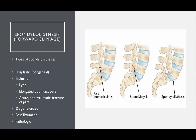Spondylolisthesis is a forward slippage. Here's your normal spine showing the area of the pars interarticularis, which is between the facets and the pedicles. The spondylolysis phenomenon is shown in the center diagram, and when that progresses it leads to slippage — here you can see L5-S1 slippage where the vertebra is translating anteriorly.